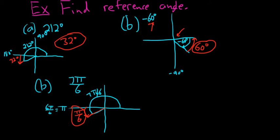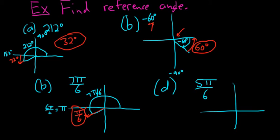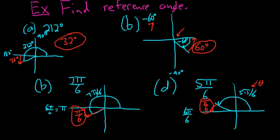One more: 5π/6. Drawing the picture — thinking of pi as 6π/6, so 5π/6 is just before pi, up in the second quadrant. The reference angle is the positive acute angle made with the terminal side of theta and the x-axis — that little angle right there — and it's π/6. So the key is to carefully draw the picture and always remember the definition: the positive acute angle made with the terminal side of theta and the x-axis. In the next video we'll do more examples.